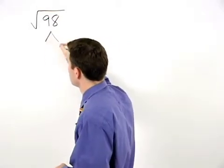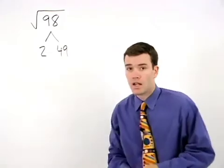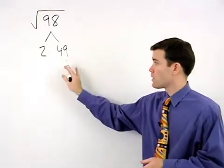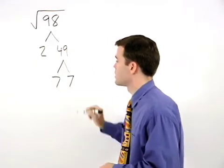98 is 2 times 49. And if you know your perfect squares, you'll recognize 49 as 7 times 7.